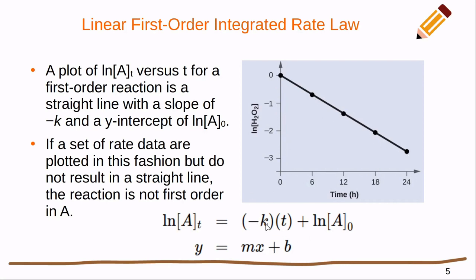The slope of this line is going to be negative k, and the y-intercept is going to be the natural log of the initial concentration. If I have data of time versus the natural log of concentration and I get a straight line with a high R-squared value very close to one, then I can say this is a first order reaction. If I do not get a straight line, then I know I do not have the correct order and I'll need to make another plot for a second order or zero order reaction.